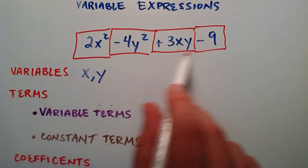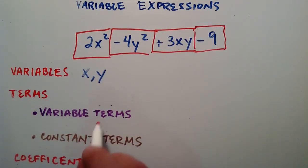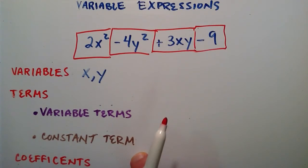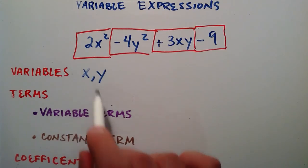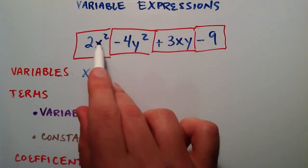Of our four different terms, we have two different types of terms. We have variable terms and we have constant terms. Actually we just have one, so we'll just put constant term there.